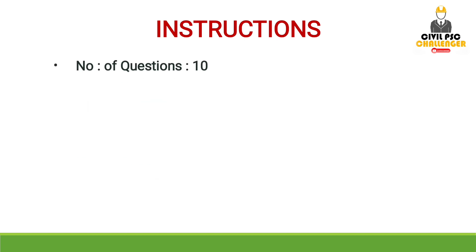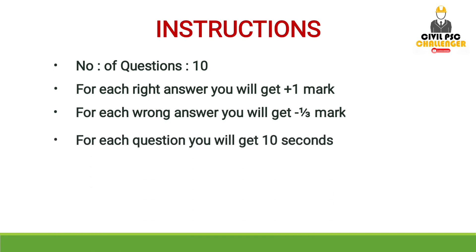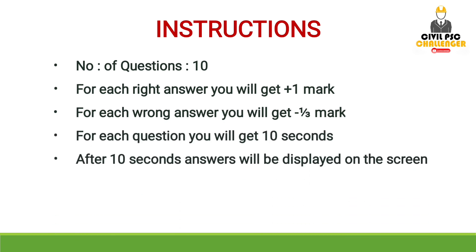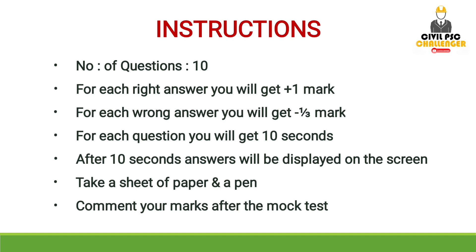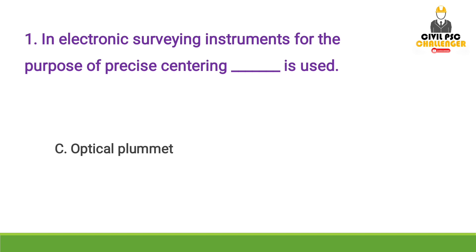Number of questions is 10. Question 1: In electronic surveying instruments, for the purpose of precise centering, dash is used. Answer: Option C — Optical Plummet. In the Total Station, we use the Optical Plummet for centering.